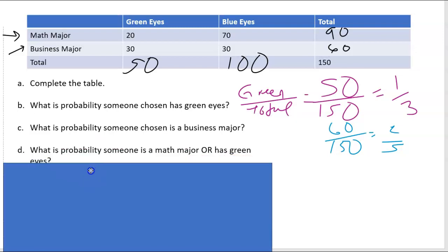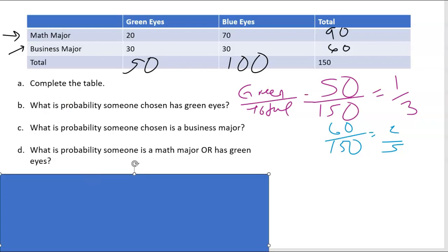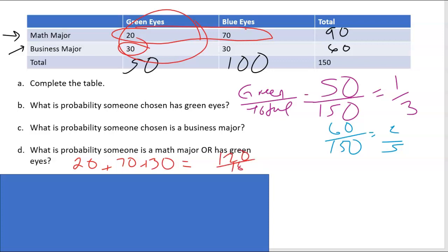Now we get into ones that are a little more tricky. So what is probability someone is a math major or has green eyes? So we're looking at those people that are math majors or the people that have green eyes. So we have a little bit of overlap. You'll notice there are 20 people that have green eyes and math majors. So you can do it two ways. The first way is saying, well, if I do math majors, that's 20 plus 70. And then I have the extra 30 people who are green eyes, which gives me 120 over 150, which is four fifths.